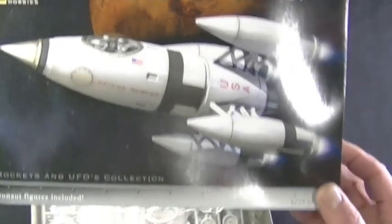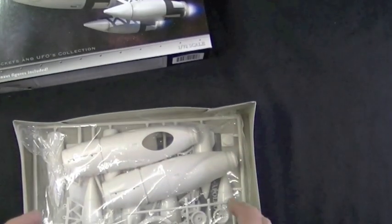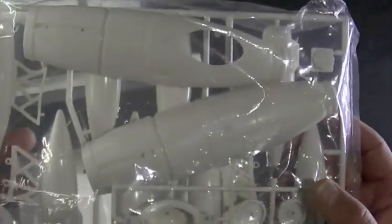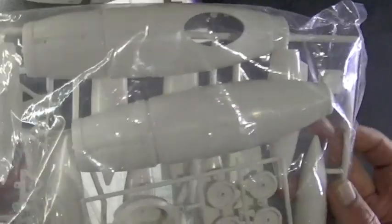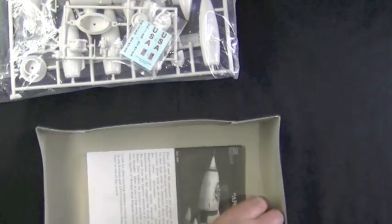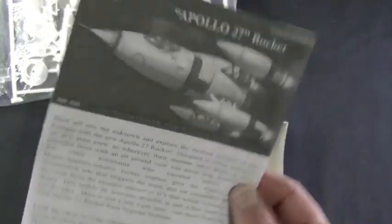So as usual let's take a look inside the box and see what we have. We get a large bag containing all the parts which are molded in white, a small decal sheet, and of course the instruction sheet. And that's pretty much it.